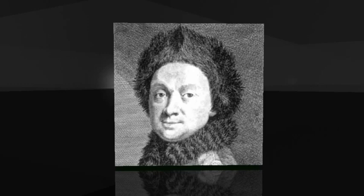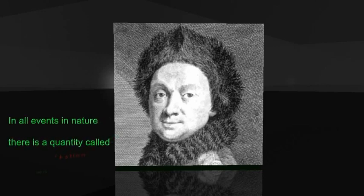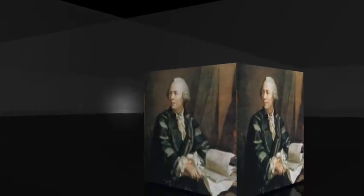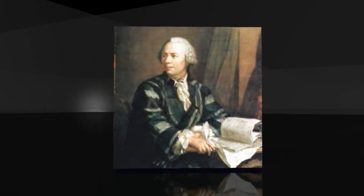Pierre-Louis de Maupertuis, the son of a wealthy pirate, expanded on Fermat's idea. He wrote that in all events in nature, there is a certain quantity called action, which is always a minimum. His good friend and mathematician Leonard Euler added the idea of conservation of energy and made least action an exact dynamical theorem with a precise mathematical form.